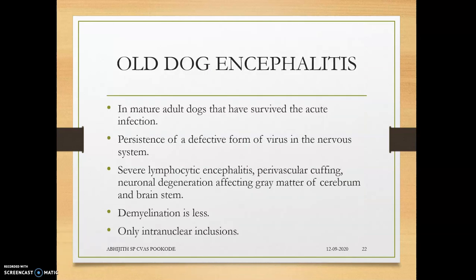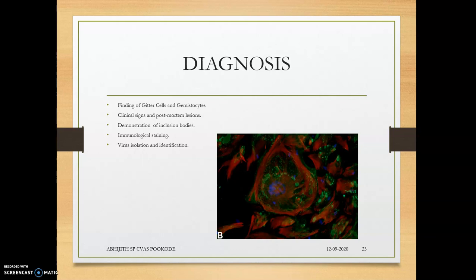Old dog encephalitis occurs in mature dogs that have survived the acute infection. It is mainly neuronal in manifestation — demyelination is less, and the gray matter of the cerebrum is affected. Many reflexes are lost and the animal behaves like an old dog. Only intranuclear inclusion bodies are found. Diagnosis involves finding Hortega cells and gemistocytes.